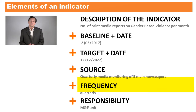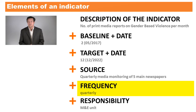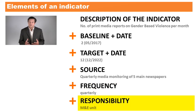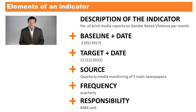The frequency defines how often the status for the indicator is updated over time. And responsibility refers to who is in charge of collecting the indicator data, if it is primary data, or who will retrieve the data in case of secondary data. A complete indicator must include at least these six elements.